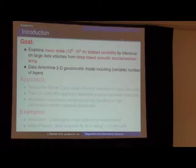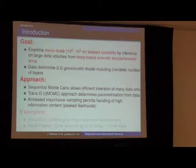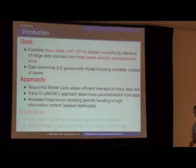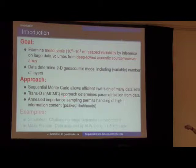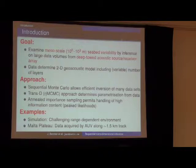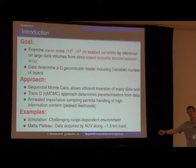The approach that we'd like to use is a sequential Monte Carlo method that allows us to efficiently analyze, or we call it in our field, invert these many data sets. We'll use a trans-dimensional formulation, a reversible jump Markov chain approach to determine the parameterization, and also use a new importance sampling that permits us to handle data that have a very high information content or a very peaked likelihood function. I'll show a couple examples. One is a simulation that we designed to test our method and see if it works at all. And then some data that we collected on the Malta Plateau in the Mediterranean just off the coast of Sicily. This data was acquired by an autonomous underwater vehicle that moved along a track towing an array and an acoustic source.